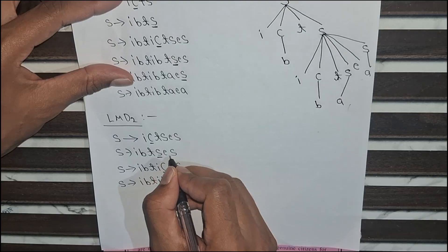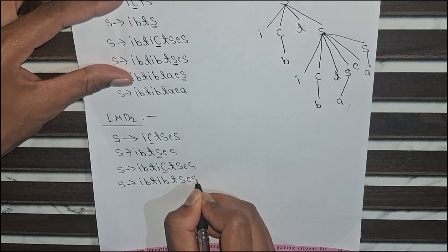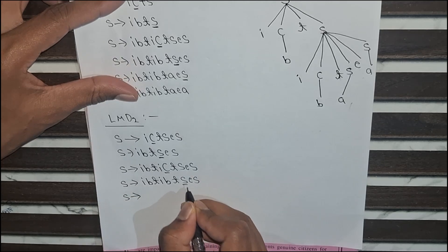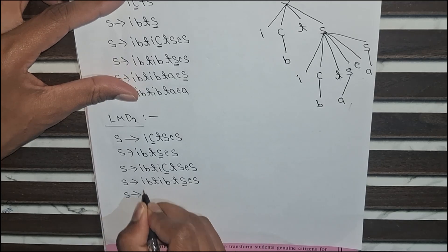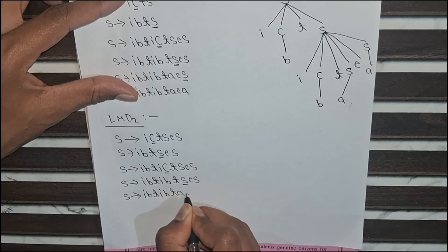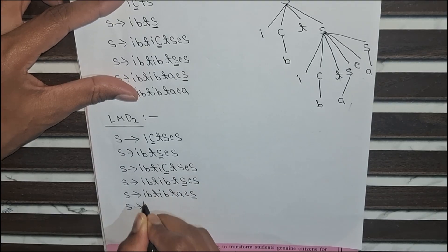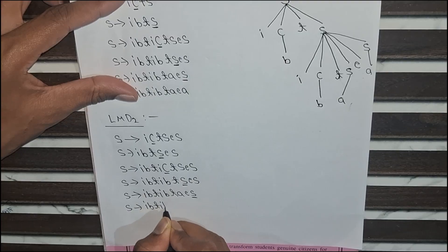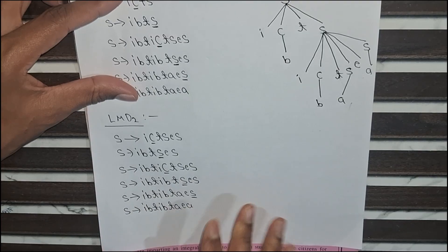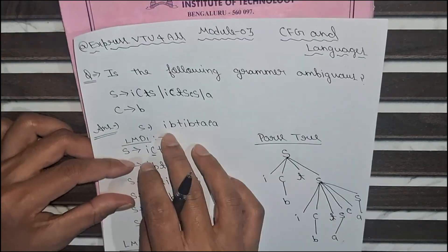Here it is e S. Now I substitute S as a: i b t i b t a e S. Then I substitute this remaining S as a as well: i b t i b t a e a. So now I have obtained the same string here.